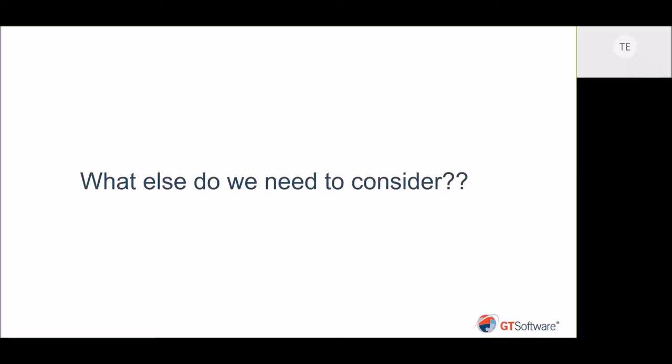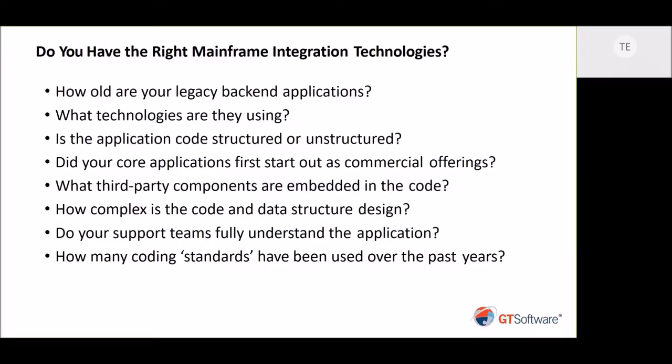What do we need to consider when we talk about APIs and modernizing or integrating the mainframe? How old are your legacy backend applications and what technology are they using? Legacy also depends on your definition — one of our recent customers had a program that was last changed in 1979. That would definitely be considered legacy. But isn't legacy anything that runs in production? You have to understand what their backend applications are doing. There's also some embedded technologies. And the application's code — is it structured or unstructured? If it's structured, is it designed to have programs call other programs as subroutines? When you expose them, you may not be able to API-enable the third program without running through the sequence of the first two.